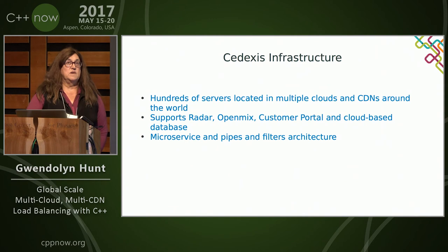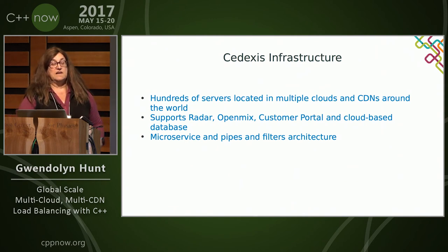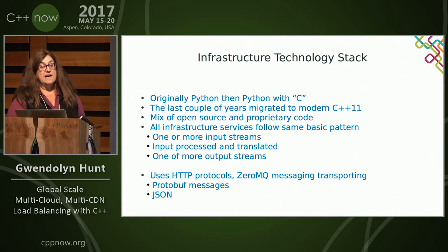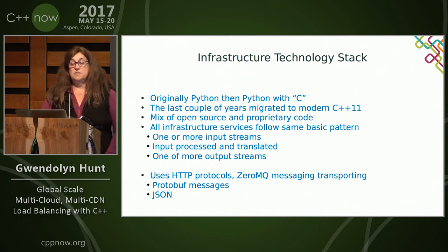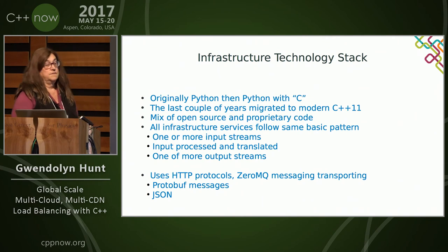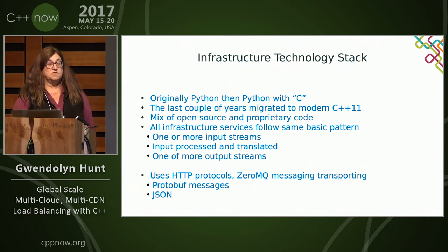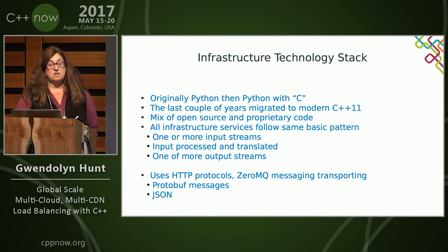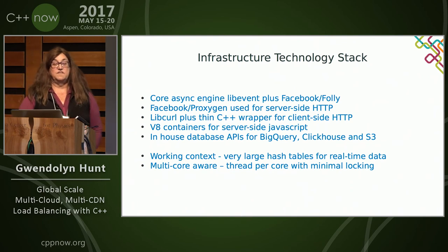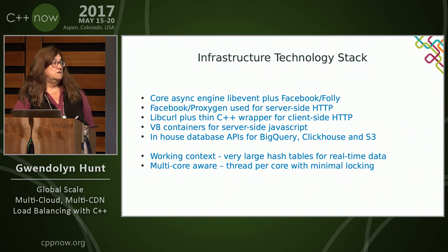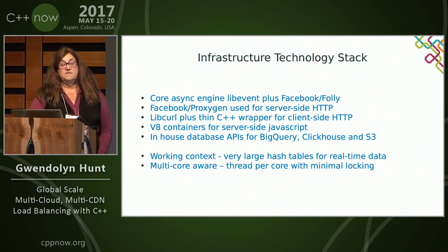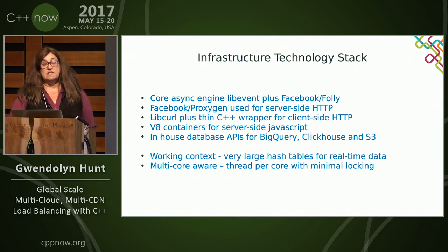Essentially, we follow a microservice architecture. If you're familiar with pipes and filters, those are our two main ways we build things. Our technology stack: we started with Python, then Python with C. In the last couple of years, we migrated to C++11 because Python, while it worked, was not performant. We mix open source and proprietary code. All infrastructure services generally follow a pattern of one or more input streams — we do some massaging of the data — and one or more output streams. We use HTTP protocols, ZeroMQ messaging, and the prevailing content format is either protobuf or JSON. Our core async engine is libevent plus Facebook Folly. Facebook Proxygen for server-side HTTP, libcurl with our own C++ wrapper for the client side. We execute some client-side JavaScript in V8 containers, and we have database APIs for BigQuery, ClickHouse, and S3.